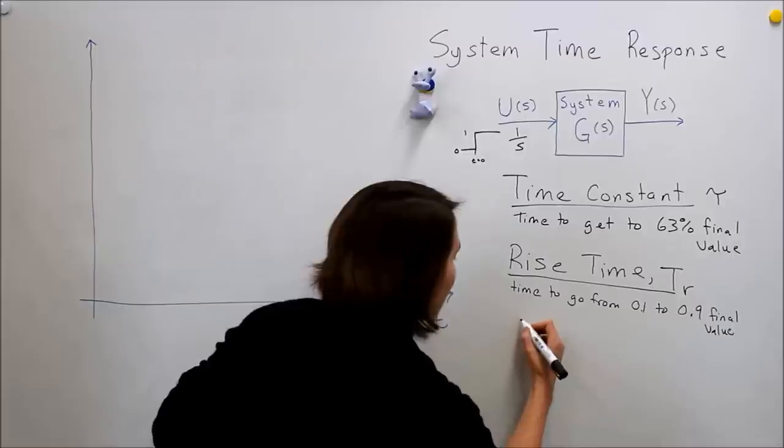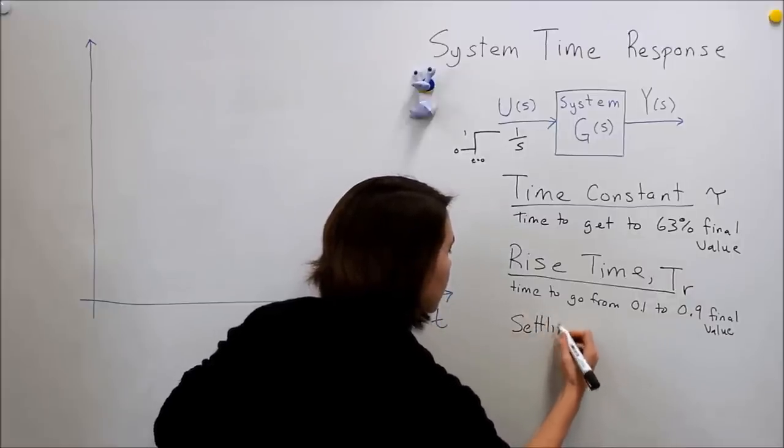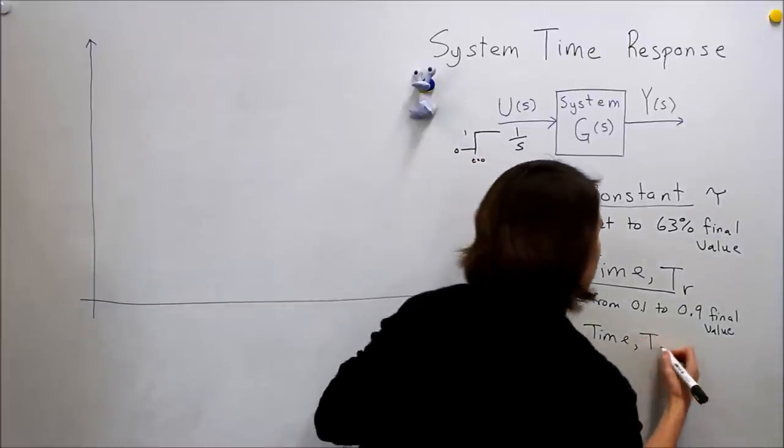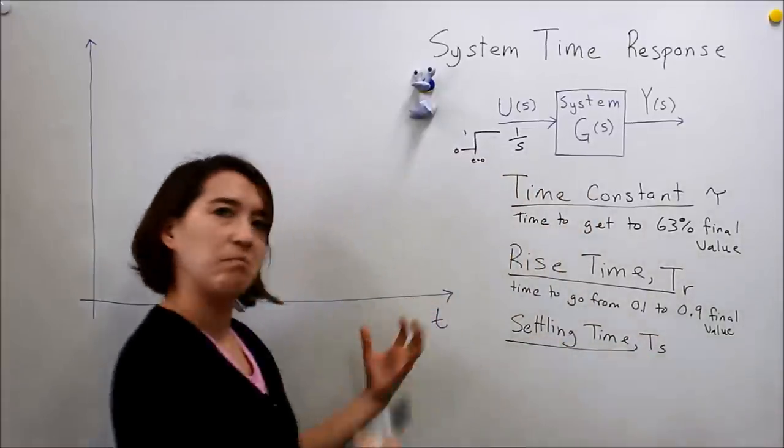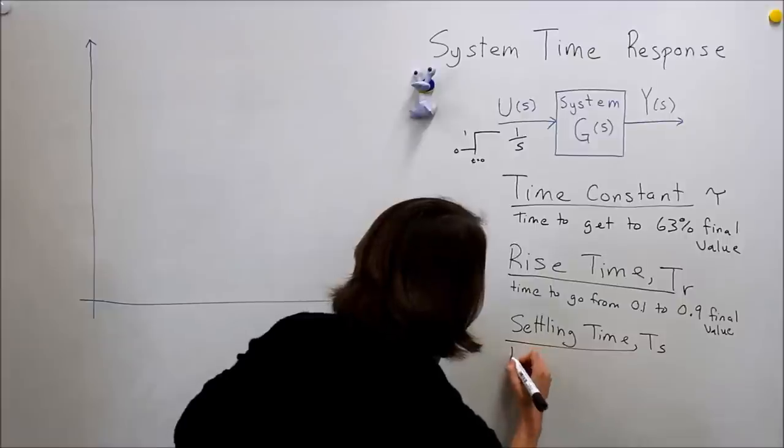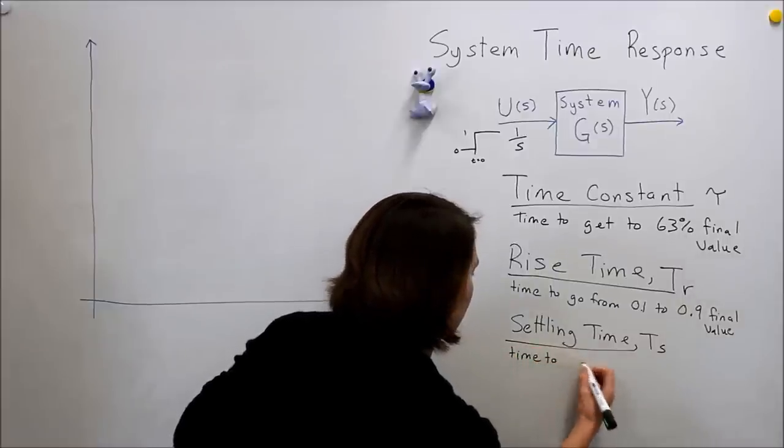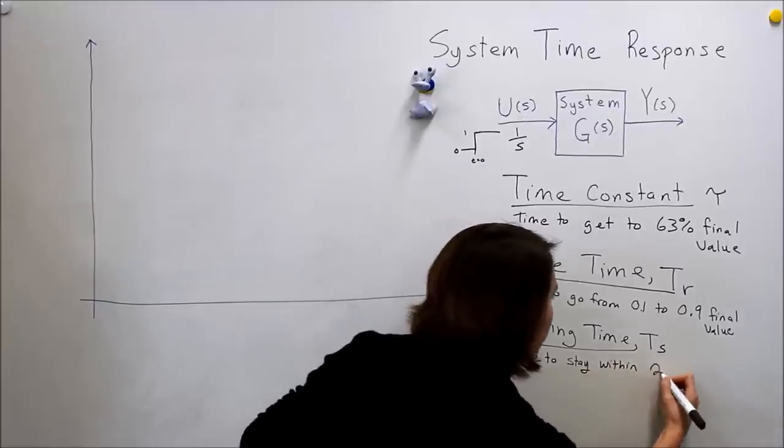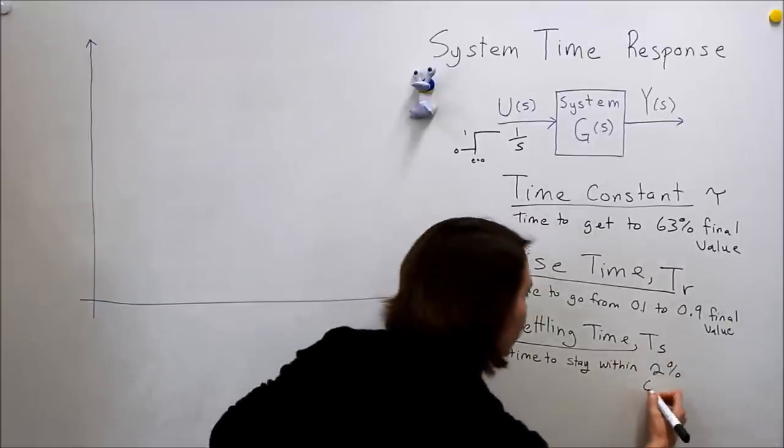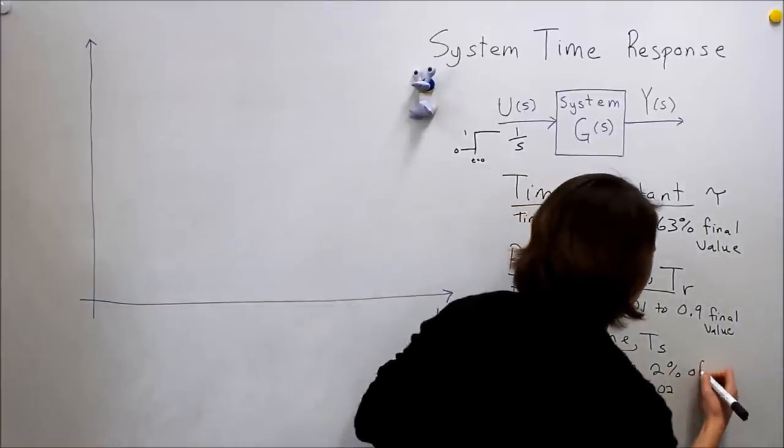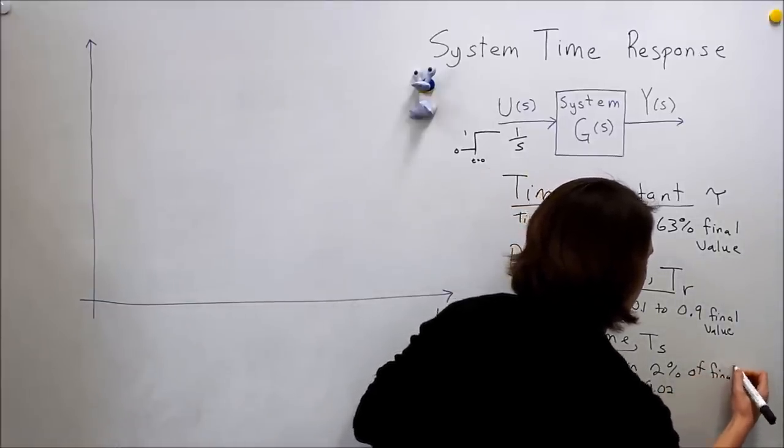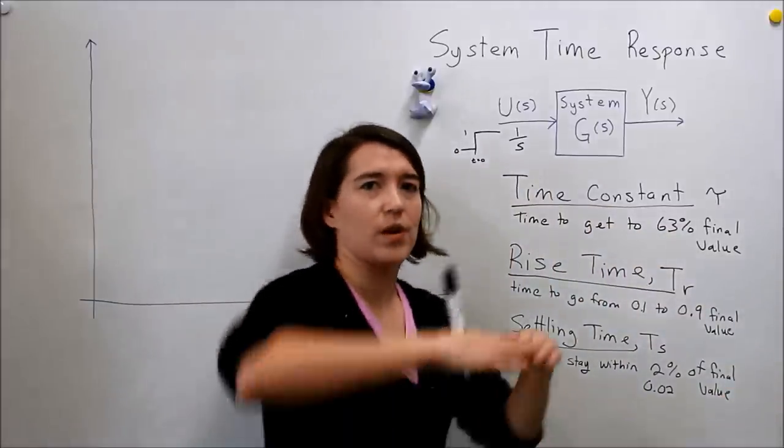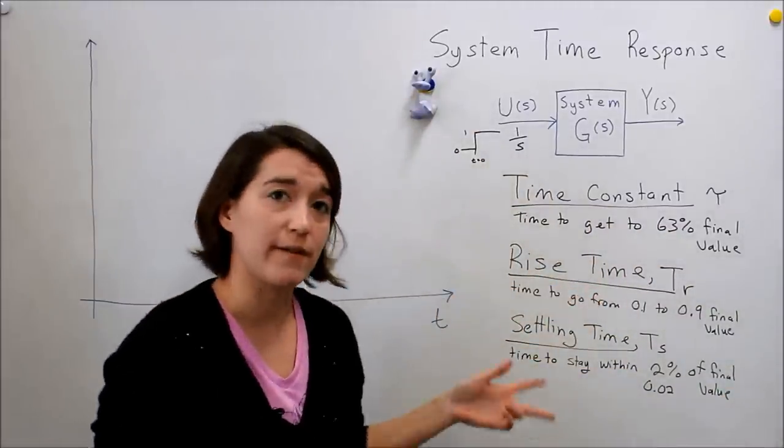And the last one is settling time. We generally call this T_S, at least the book does. And it's the time it takes to stay within 2%, so 0.02 of the final value, or to go above 98% and stay within 2% of that final value.